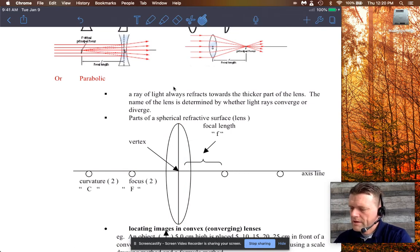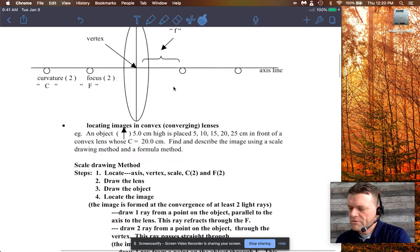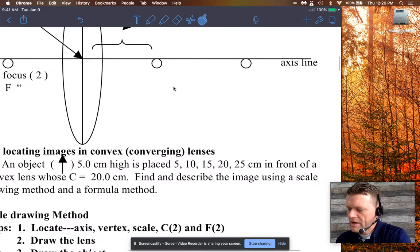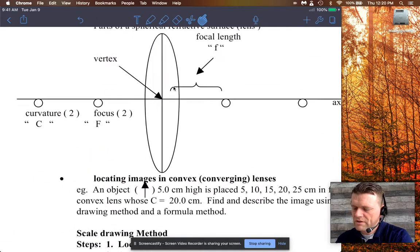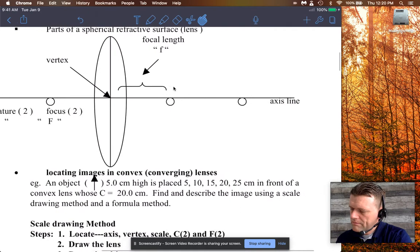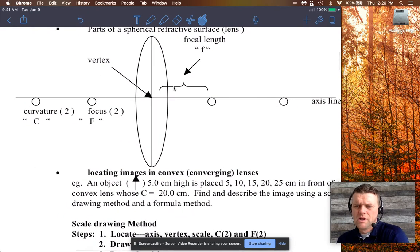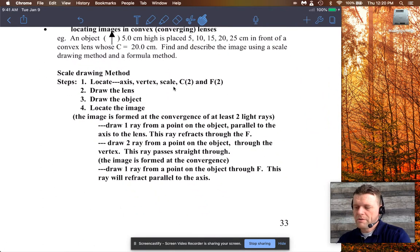And this exercise wants to place an object that's five centimeters high and place it at those locations in front of a convex lens whose... oh sorry, not the focus, the center is 20 centimeters. So anyway, just as a matter of quick overview, we can just discuss this because it's already been done.